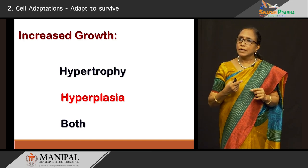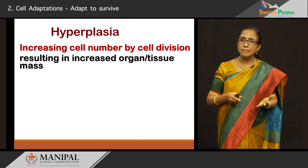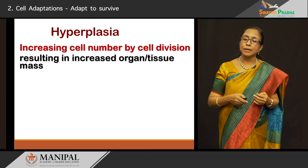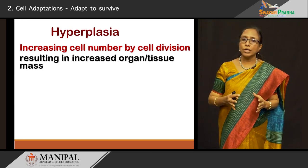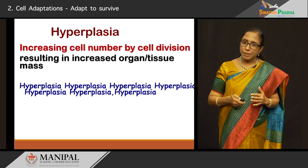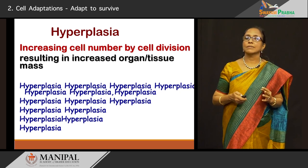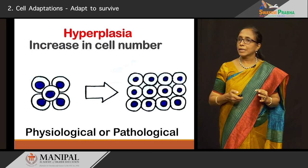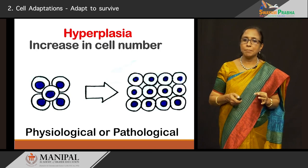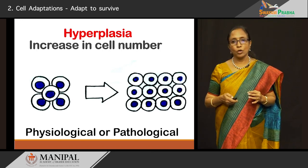Going on to the next condition of increased growth, that is hyperplasia. Hyperplasia — hyper means big, plasia means number of cells are increasing. So increase in the cell number by cell division, resulting in increase in the organ or the tissue, is called hyperplasia. To depict it in a diagram: increase in cell numbers, the size remains the same but the number of cells increases. Again it can be seen in physiological conditions and pathological conditions.